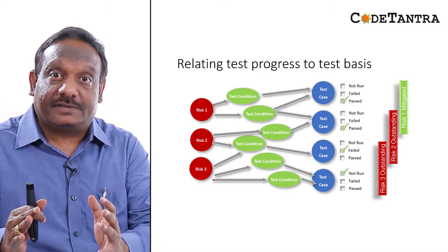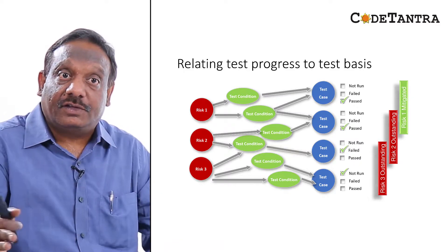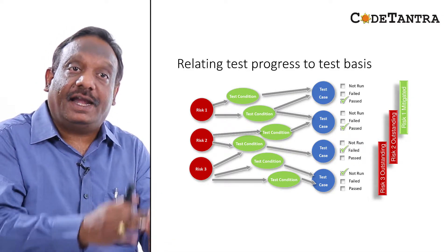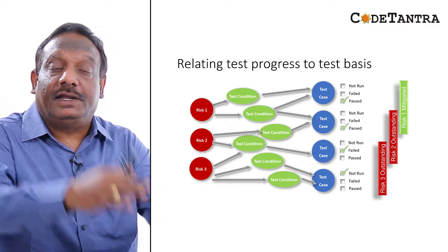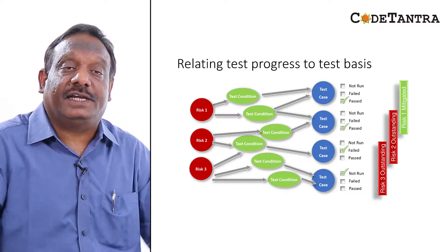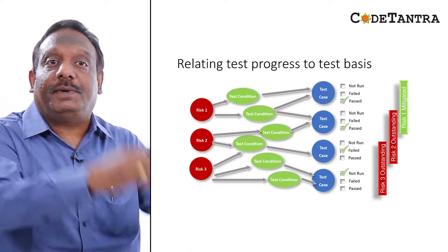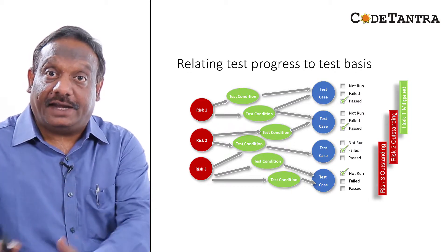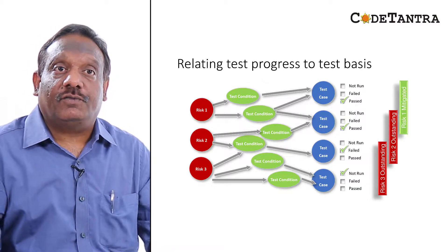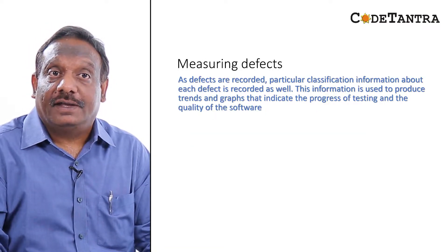In this example we linked test cases back to test conditions and then to risks. Similarly, if you are using a requirement-based or specification-based test strategy, you would link requirements to test conditions to test cases and their current status. That is how this framework is applied across different test strategies.